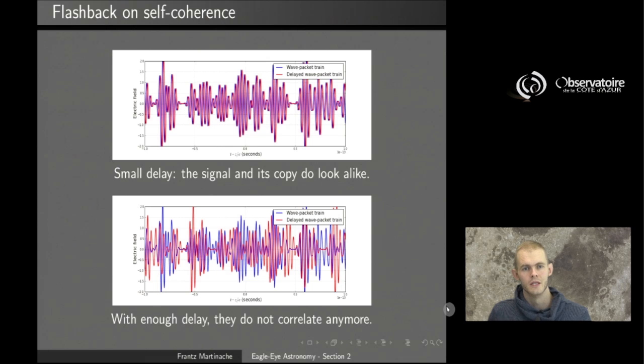If we go back to the case of self-coherence, remember that we've said that, when two signals are slightly delayed in time, so one signal and its copies are slightly delayed in time, the self-coherence can be quite strong. But with enough delay, the two signals look so different from each other that they are going not to correlate at all.